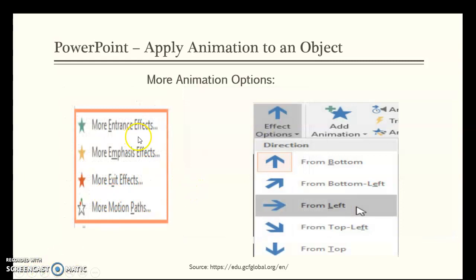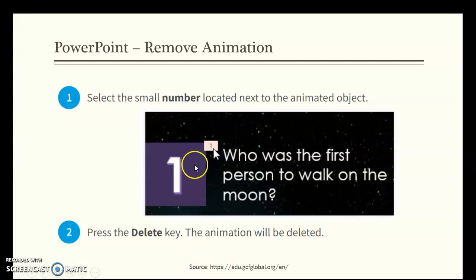These are the more options if you wanted more entrance effects, emphasis, exits, or paths, you can choose depending on them, they're not all shaded, that you could choose an effects option. You can even add more animation. So if you just had the entrance effect, and you also want it to have emphasis, you would click add an animation, so that you could add more to it. To remove an animation, you decide you don't want it, just press the delete key, and the animation will disappear by just selecting the number and deleting it.